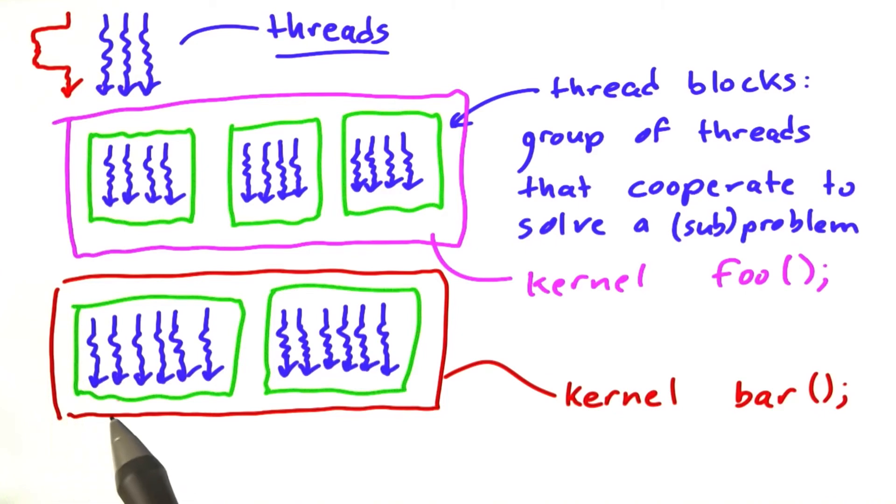Another thing to notice about the way I drew this is that you notice I have a different number of thread blocks with a different number of threads. That's actually something you can pick for each kernel.